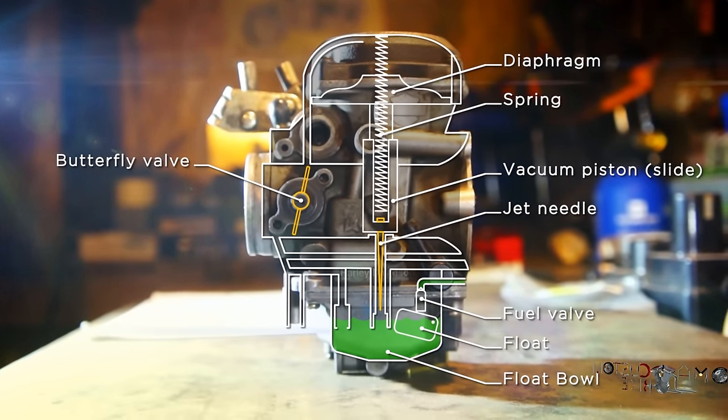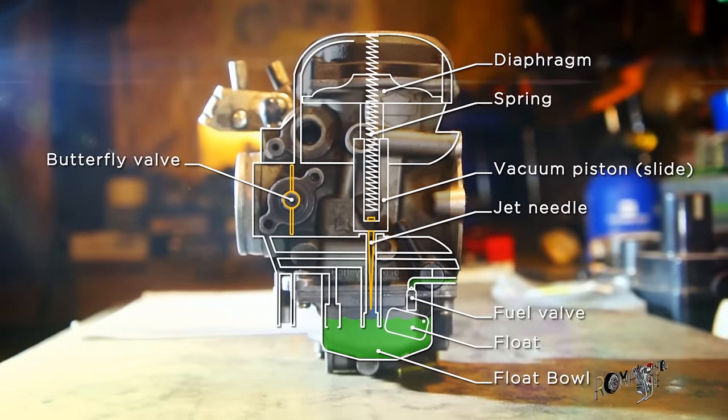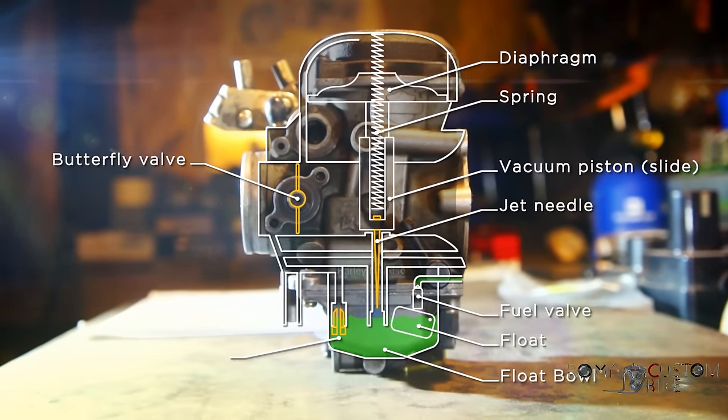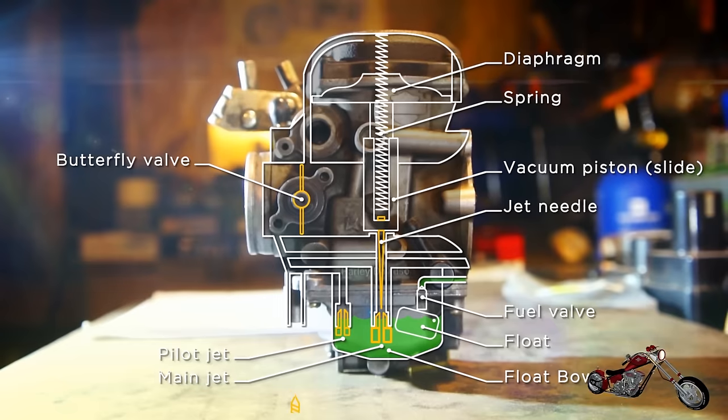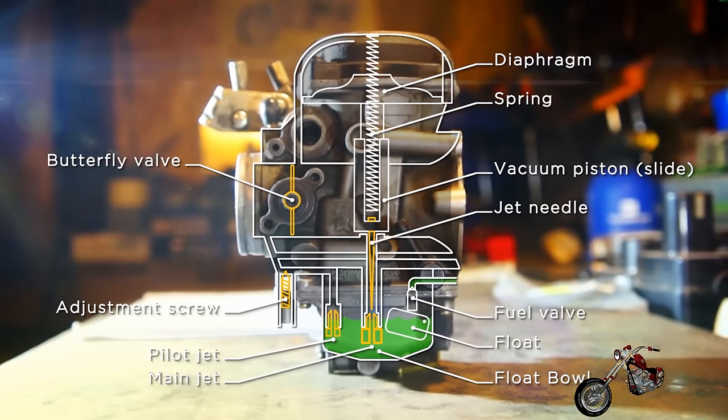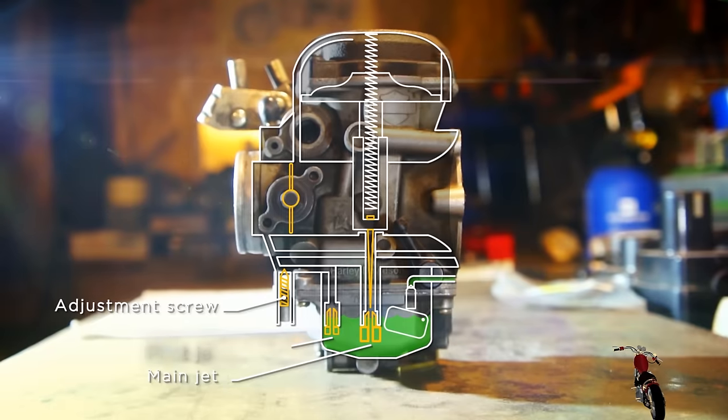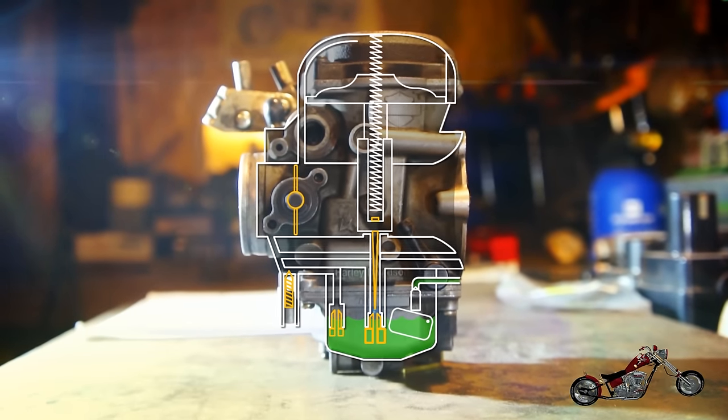Then we have the butterfly, controlled directly by the throttle cable. And finally we have the pilot jet and the main jet, both feeding the two fuel circuits inside the carburetor. Last but not least, the fuel mixture adjustment screw.